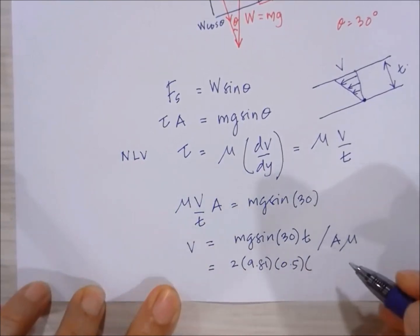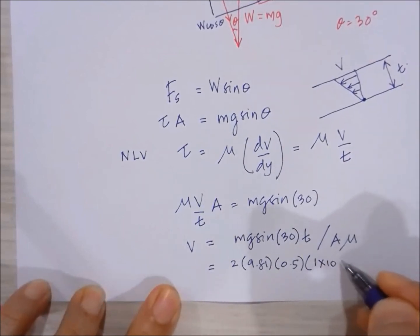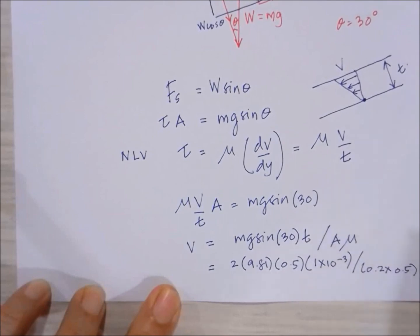And the thickness of the lubrication oil is 1 times 10 to the minus 3 divided by the area. Area is 0.2 multiplied by 0.5 multiplied by mu. Mu is given to be equal to 0.25.